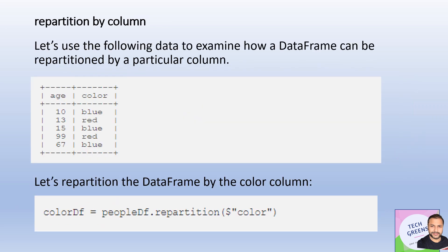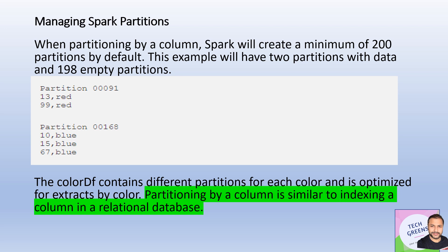Let's look at one more example — repartitioning by a column. We have created a small DataFrame with 'age' and 'color' columns, and we repartition on the color column. When we do that and create two partitions, the partitions are organized based on the column values. Repartitioning by column is analogous to creating indexes in a relational database. So if we fire a join or reduceByKey kind of operation on that partition key, the operations would be super fast.